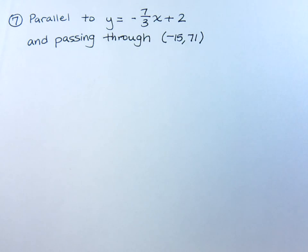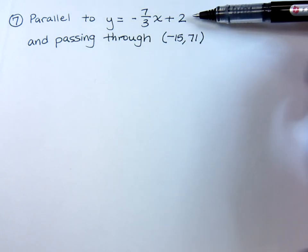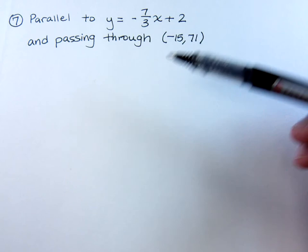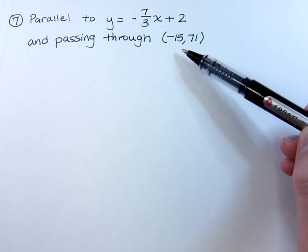Alright, in this video we want to look at finding an equation of a line that is going to be parallel to y equals negative 7 thirds x plus 2 and it's going to pass through the point negative 15, 71.